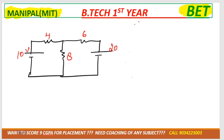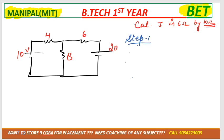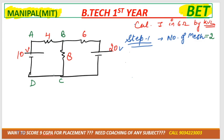Draw this diagram in your notebook. Suppose they ask you to calculate current in 6 ohm by using KVL. We'll follow certain steps. Step number one: we have to determine how many meshes there are. Just imagine this is your house. Tell me in this circuit — that is your home — how many rooms are there? Two. So two rooms means we'll have two number of meshes. One mesh is A, B, C, D.